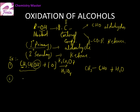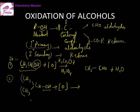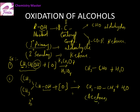Second example: secondary alcohol CH3CHOHCH3 reacts with K2Cr2O7 in the presence of H2SO4. You should be able to tell it's secondary because the carbon bearing the OH group has two alkyl groups attached. Using the same reagent, a 3-carbon secondary alcohol gives a 3-carbon ketone — acetone. Acetone has a distinct smell and is a component of nail polish remover.